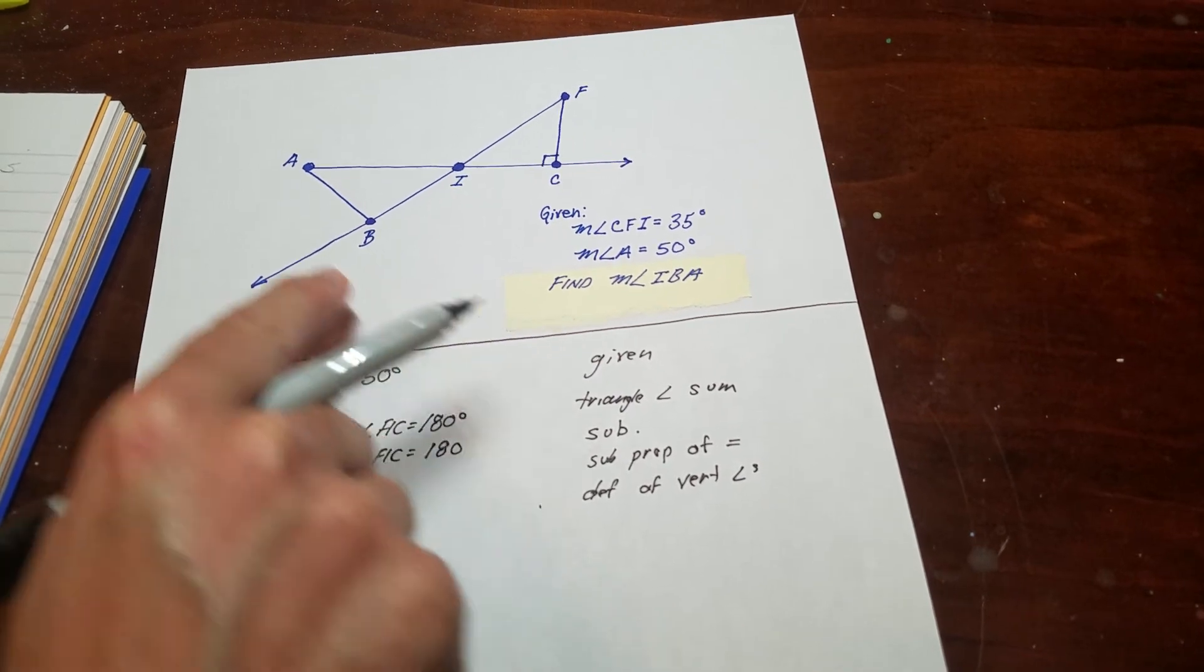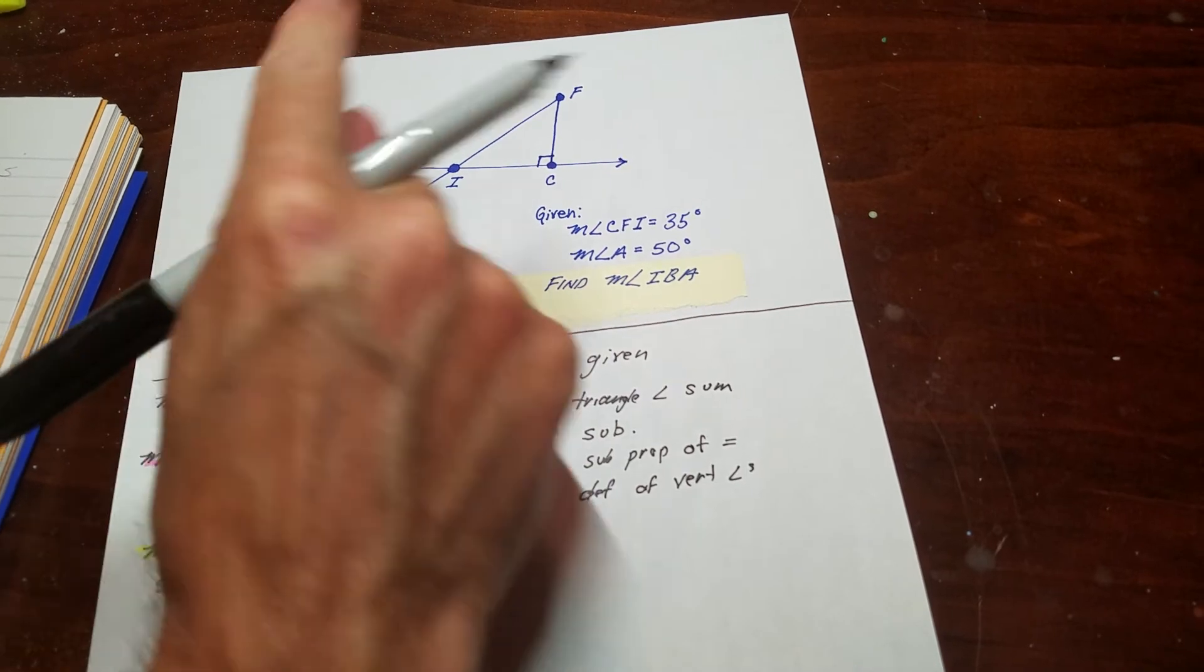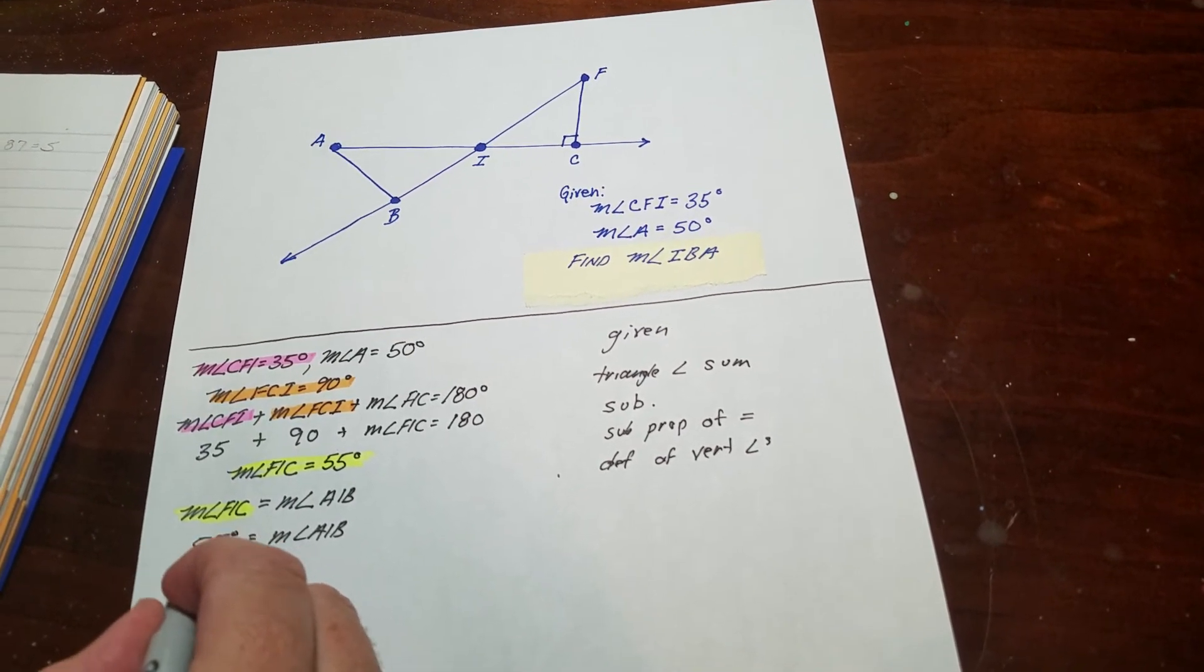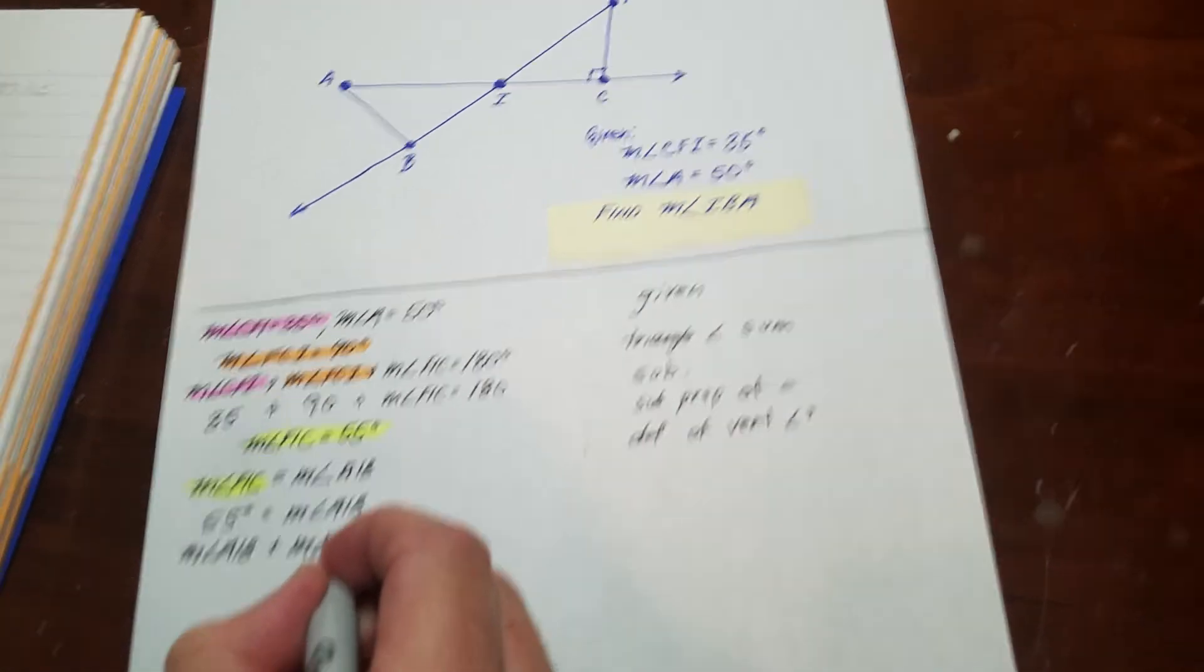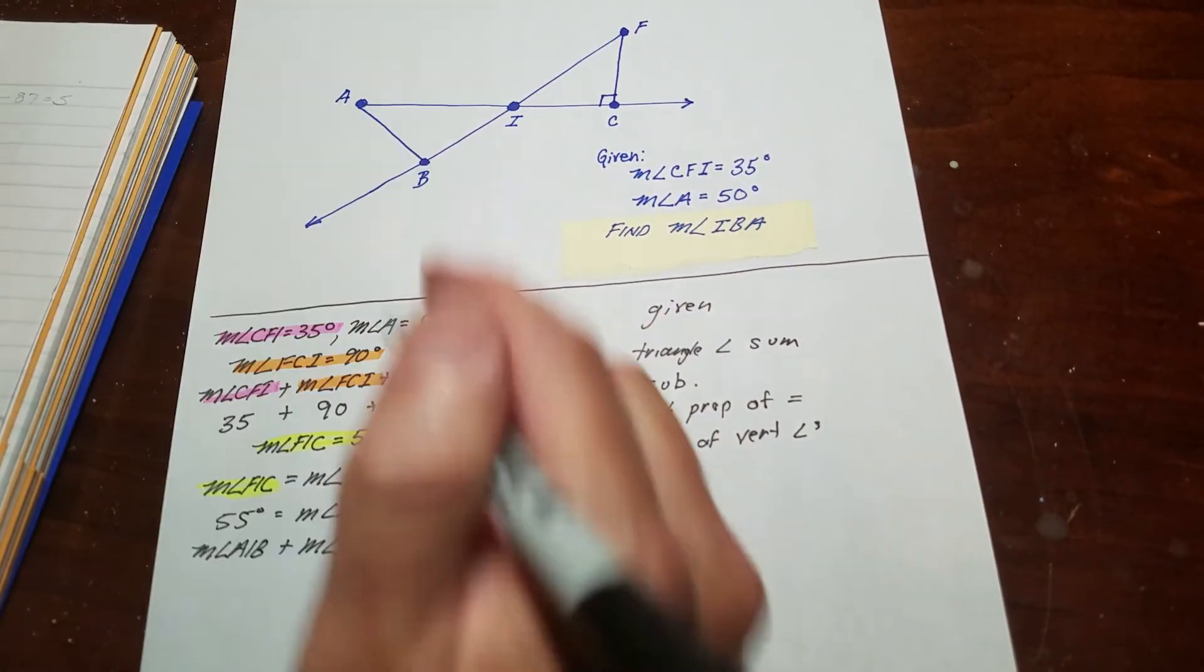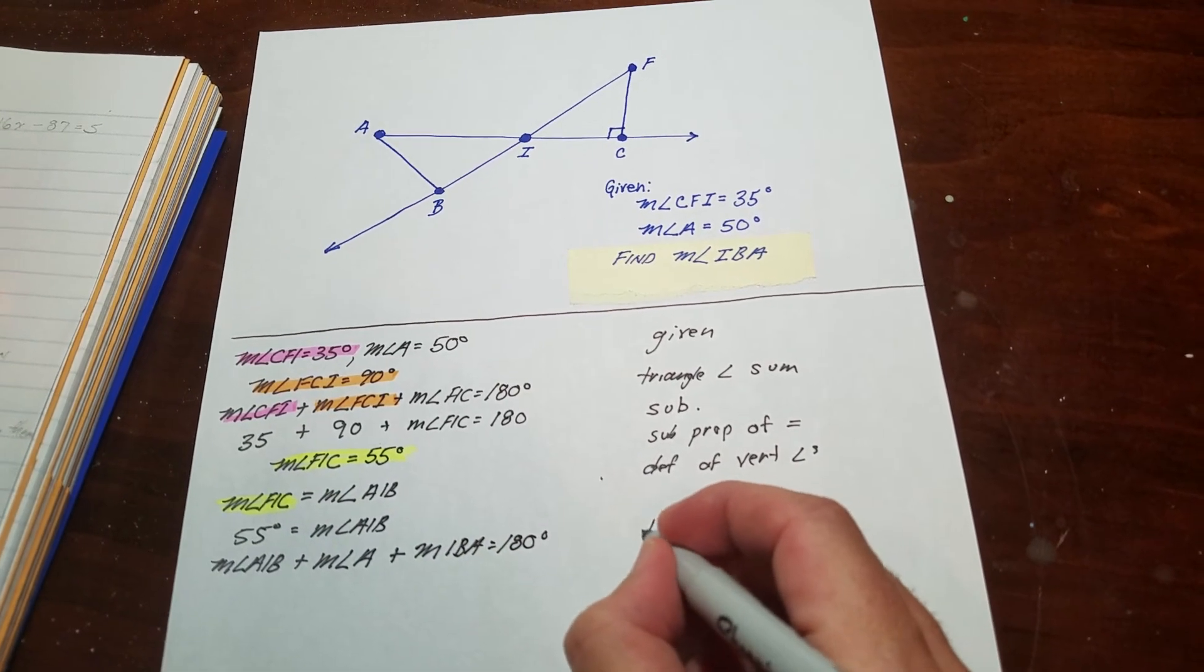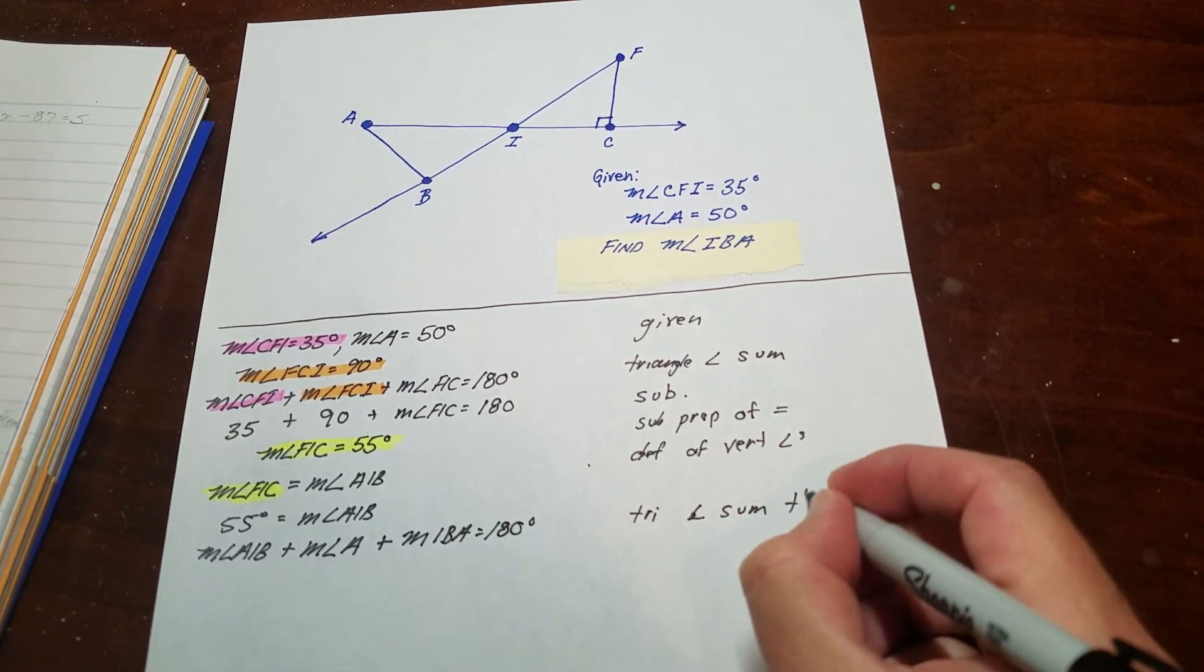They also told me angle A equals 50 degrees. Now I have two angles in this triangle, and using the triangle angle sum, I can figure out the third. I set up an equation: the measure of angle AIB plus the measure of angle A plus the measure of angle IBA equals 180 degrees. That's the triangle angle sum theorem.